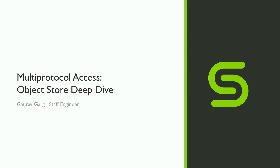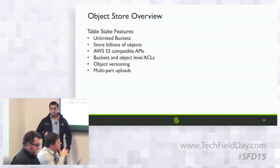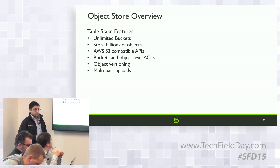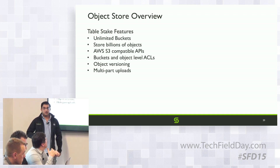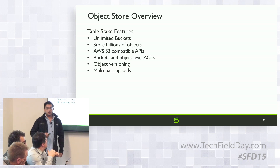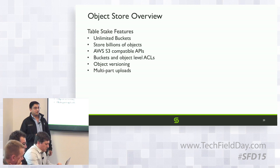I'll give a brief overview of our object store. We support all the table-stake features: AWS S3 compatible APIs, unlimited bucket creation, billions of objects ranging from a few kilobytes to terabytes with no size limit. We support bucket-level and object-level ACLs, object versioning, and multi-part upload, among many other features.